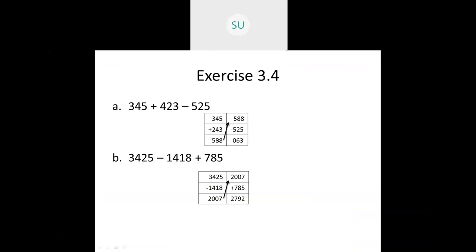Now 588 minus 525: 8 minus 5 is 3, 8 minus 2 is 6, 5 minus 5 is 0 — so the answer for question a is 63. Question b is 3425 minus 1418 plus 785.